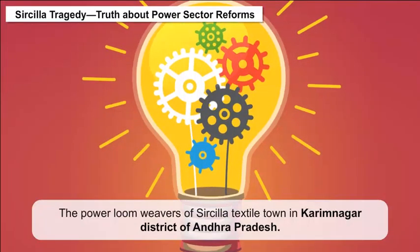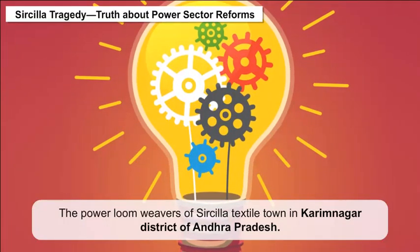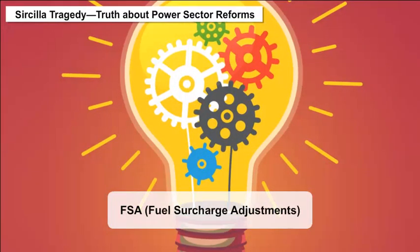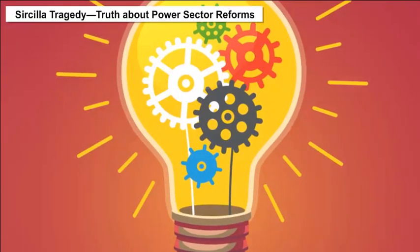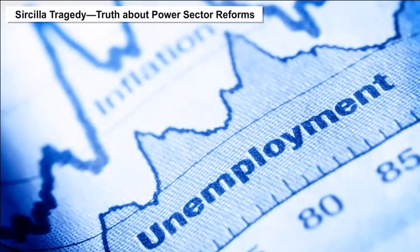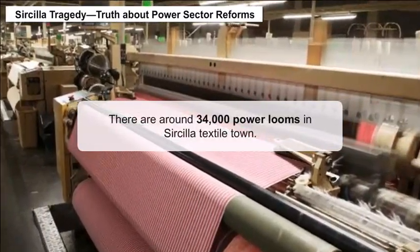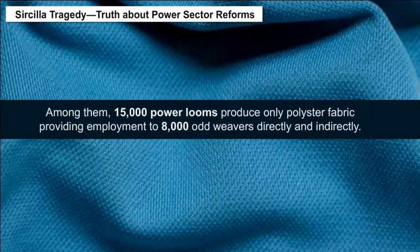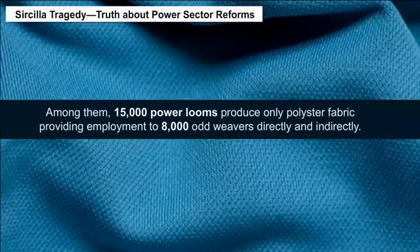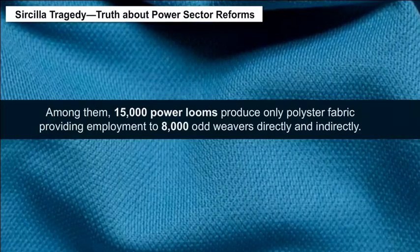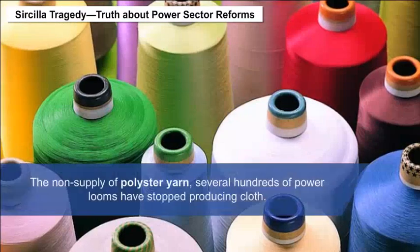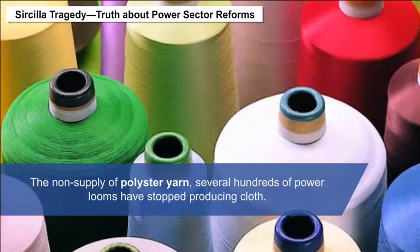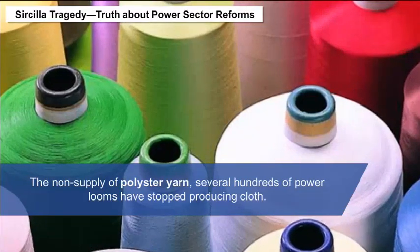The Circular Tragedy – Truth About Power Sector Reforms: The power loom weavers of Circular Textile Town in Karimnagar District of Andhra Pradesh, who are yet to recover from the burden of fuel surcharge adjustments (FSA), are now reeling under the crisis of unemployment. There are around 34,000 power looms in Circular Textile Town; among them, 15,000 produce only polyester fabric, providing employment to 8,000 odd weavers directly and indirectly. Following the non-supply of polyester yarn, several hundreds of power looms have stopped producing cloth and others are heading toward closure.